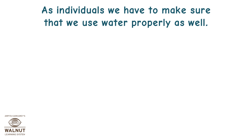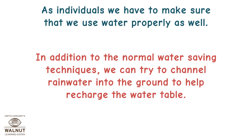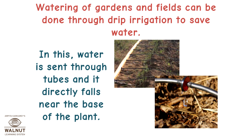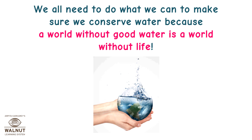As individuals, we have to make sure that we use water properly as well. In addition to the normal water-saving techniques, we can try to channel rainwater into the ground to help recharge the water table. Watering of gardens and fields can be done through drip irrigation to save water — water is sent through tubes and it directly falls near the base of the plant. We all need to do what we can to conserve water, because a world without good water is a world without life.